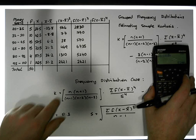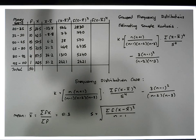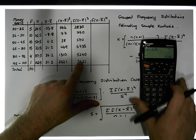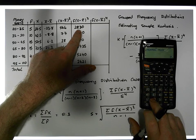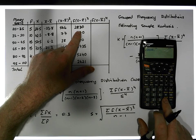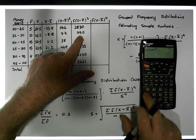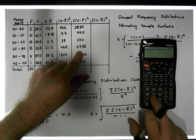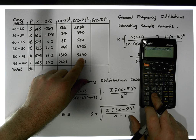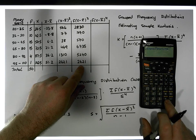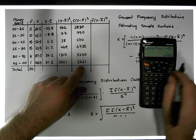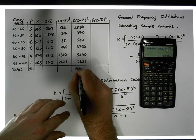We can now calculate the sum of the frequencies times (x minus x̄)² values by summing up this column. So: 2830 plus 770 plus 570 plus 6735 plus 5240 plus 2621 gives us a value of 18,766.